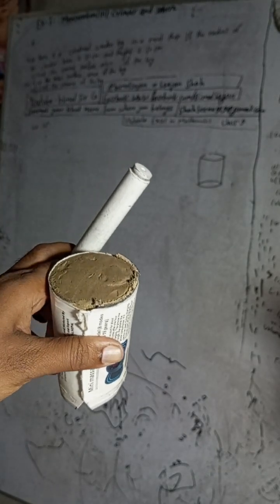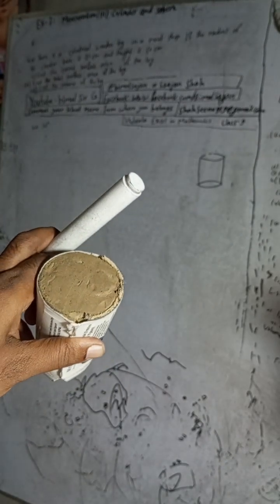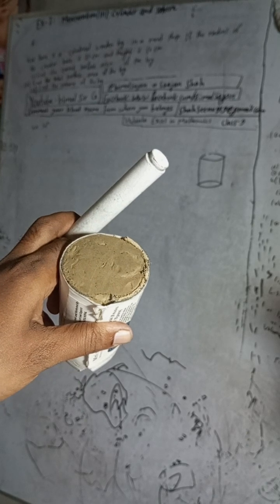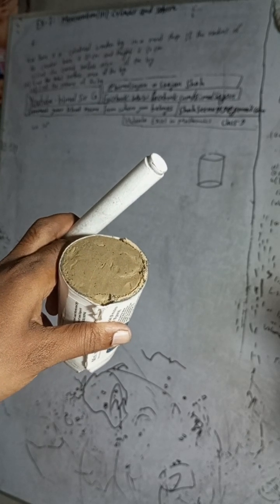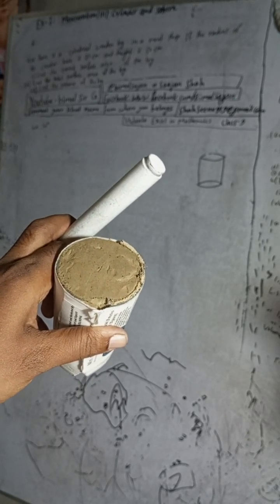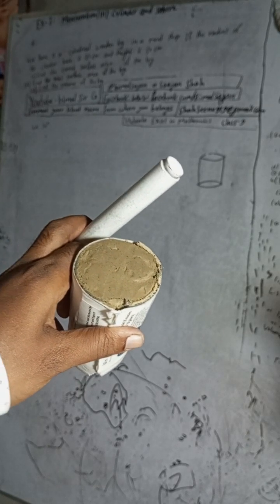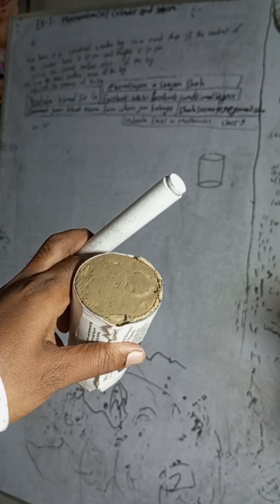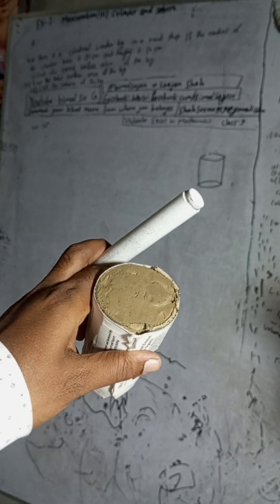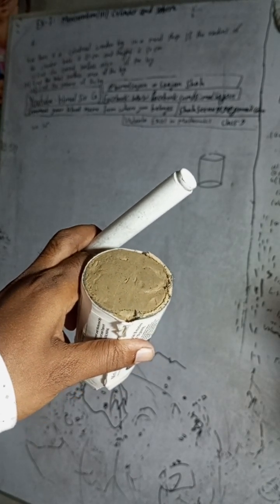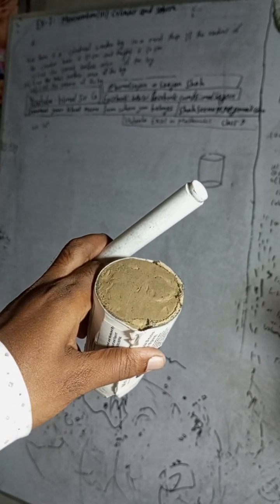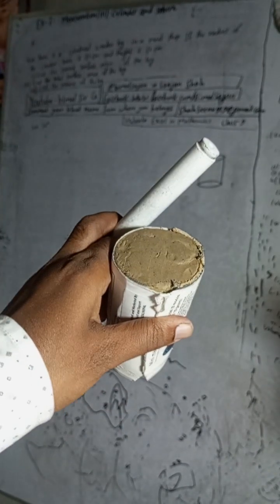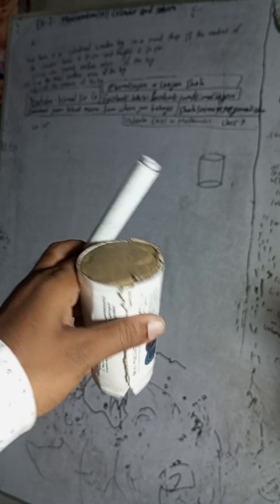Hi class 9 and 10 students, welcome back to Bimbal Sarji YouTube channel. This is question number 4a, exercise 7.1 — mensuration, third part: cylinder and sphere. The question is: there is a cylindrical wooden log in a mid shop, like this cylindrical shape.